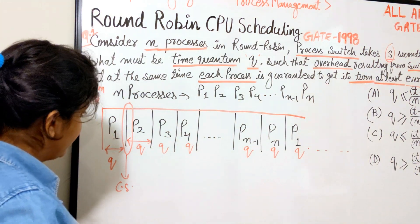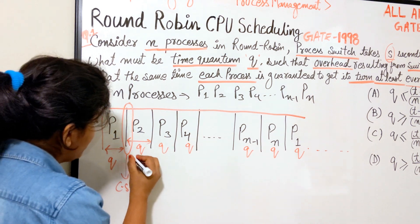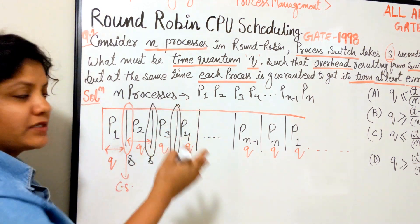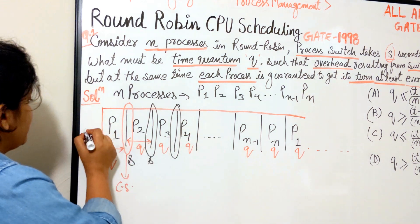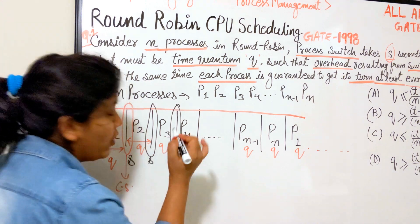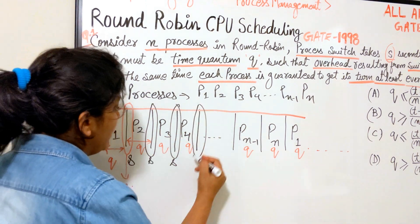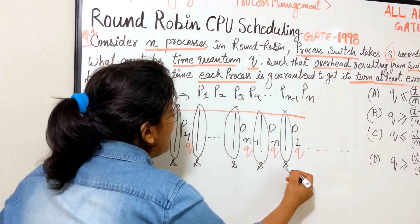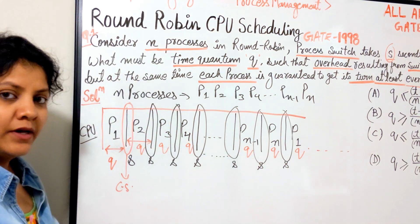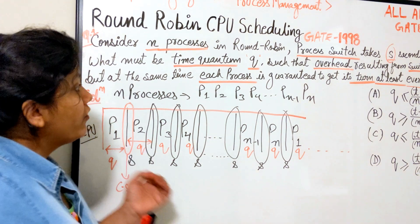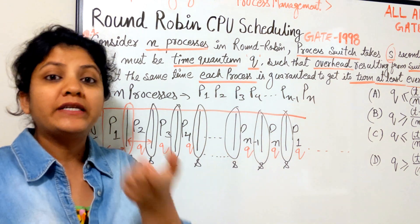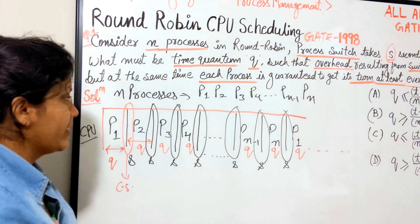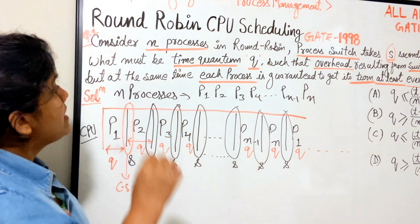Each context switch consumes s seconds. So between p1 and p2 we consume s seconds, between p2 and p3 we consume s seconds, and likewise between every consecutive process. Every time a process is taken back and a new process is given to the CPU, a context switch takes place consuming s seconds. This applies to all transitions throughout the scheduling sequence.